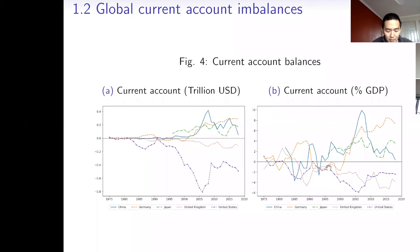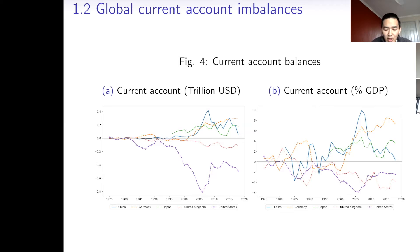The second fact is about global current account imbalances. The current account is a broader measure of international trade. The two graphs present the current account balances of five major economies in the last half century — one in levels and one in terms of GDP. Five countries: the United States, the United Kingdom, China, Germany, and Japan. This indicates that current account imbalances have increased persistently since the 1980s, particularly North America has run persistent deficits and Asia, especially China and Japan, has run large surpluses.